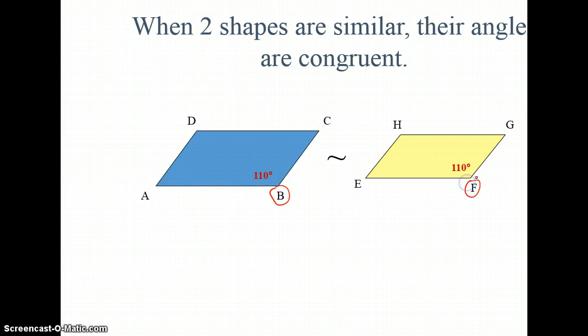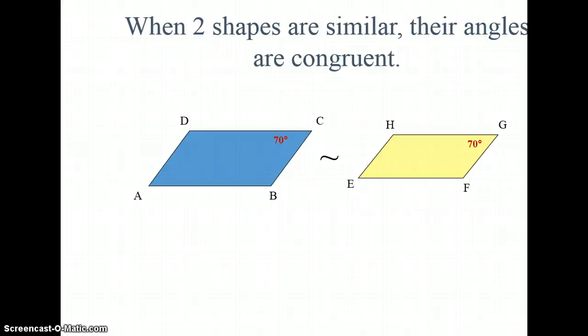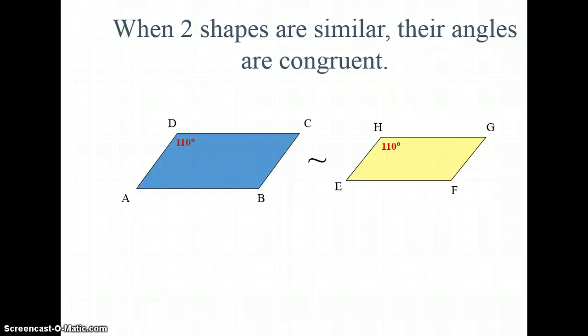B corresponds with F. That just means, corresponding means, that it is in the same position on different shapes. Notice, C and G are corresponding angles because they're in the same position on two different figures here. They're going to have the same angle measures. Same with D and H.